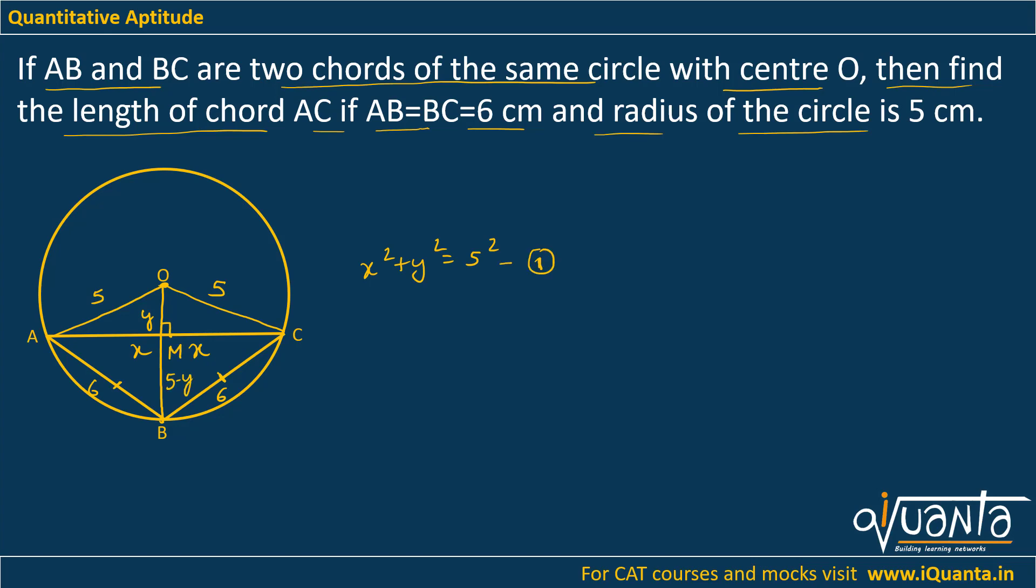So if I apply Pythagoras theorem in triangle MCB, I will be getting X square plus (5 minus Y) square, this will be equal to 6 square.